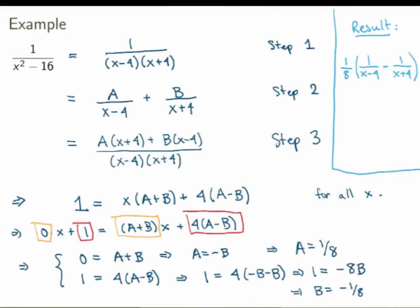That's the method: first factor the denominator, second write down the partial fraction decomposition in terms of a certain number of unknowns, and then solve for the unknowns by putting everything on a common denominator. The key step is step two — you need to know what form the partial fraction decomposition takes.